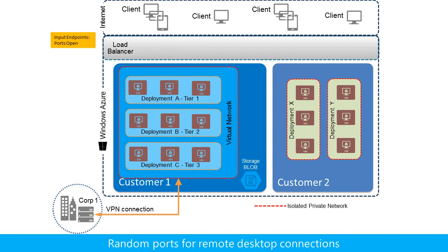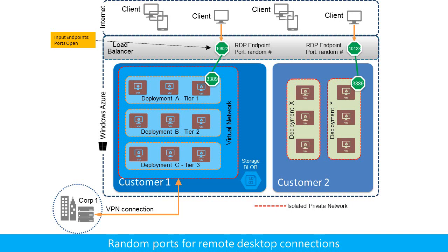As another example, an input endpoint allows RDP traffic to a randomly determined TCP port and maps it to the well-known port for RDP traffic to the virtual machine. This allows remote administration of the virtual machine without opening the well-known RDP port to the Internet.